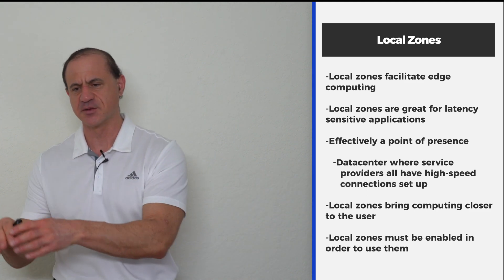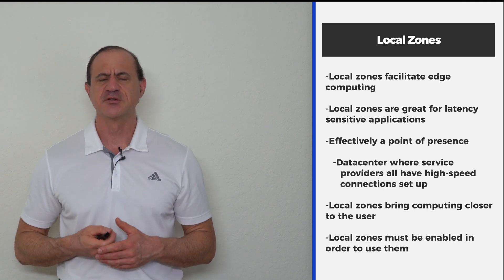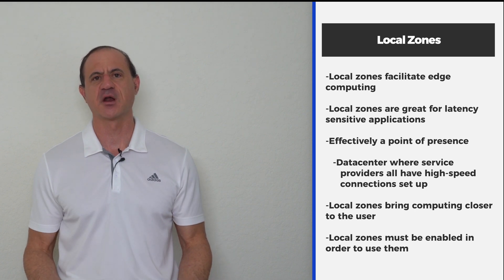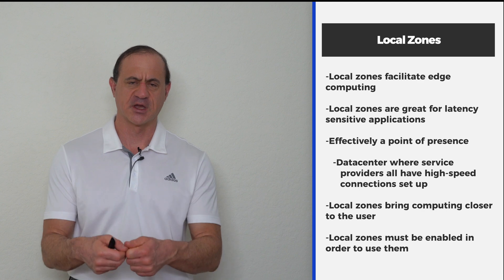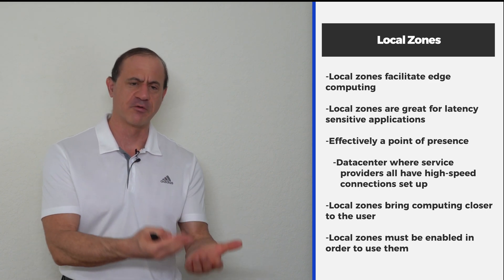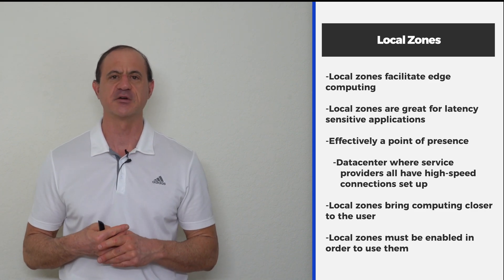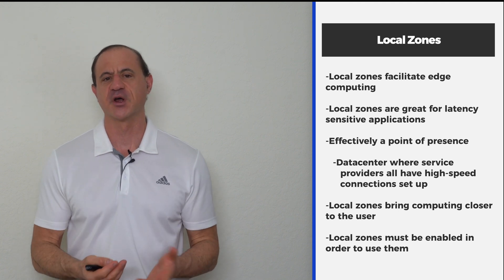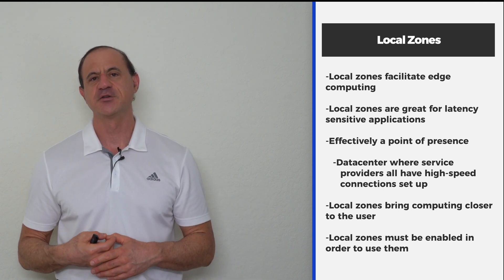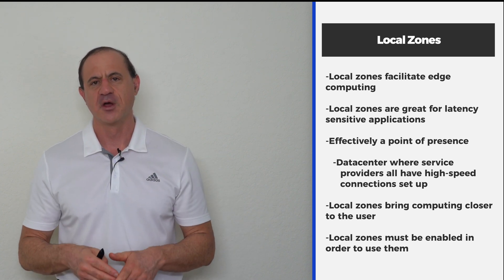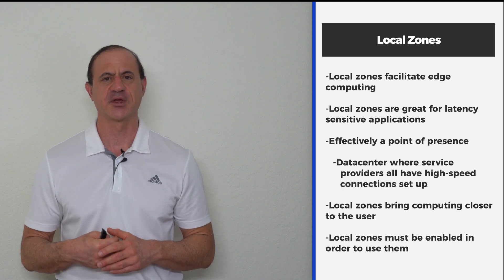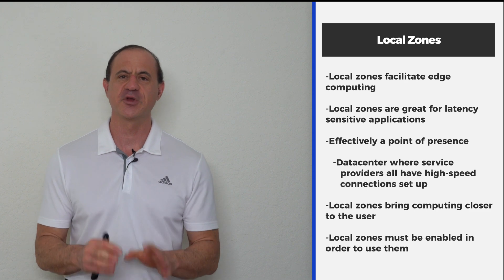The local zone is basically a region that reaches out to something called a point of presence. The way the internet works is in some major cities throughout the world, there's this concept of a point of presence — a data center where every major internet service provider has a high speed connection, and they all connect through switches and routers inside of that data center. Every time you request something on the internet and need to traverse multiple internet service providers to get to the destination, that's how they connect through these points of presence. The local zone basically says you can put your computers inside of one of those points of presence. So if you're one of the lucky people to have a local zone near you, you can place your computing power inside that point of presence, and connect to your applications with super low latency since your direct connection is probably going through one of these points of presence as well.